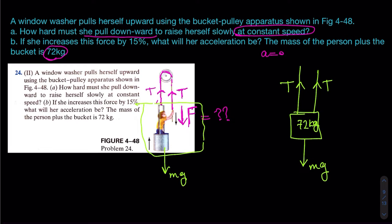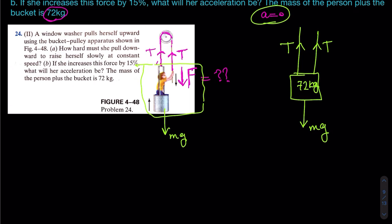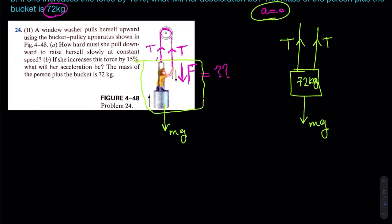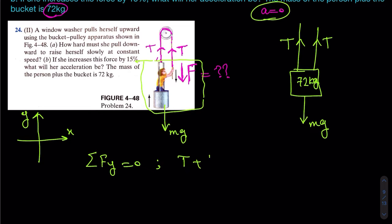The magnitude of both tension forces is the same. Since acceleration is zero, we apply the equilibrium condition: sigma F_y equals zero. Using upward as positive and downward as negative: T plus T minus mg equals zero.